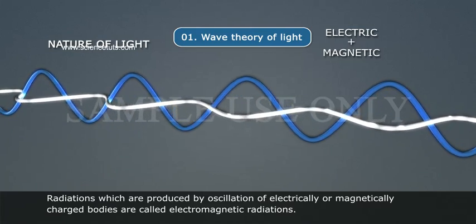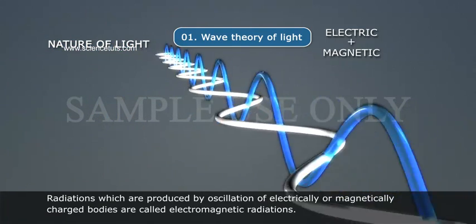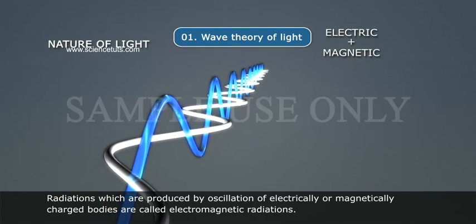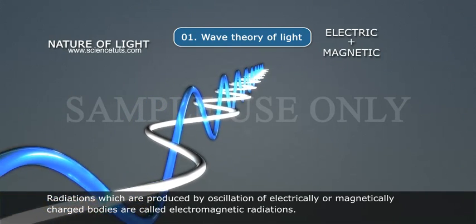Radiations which are produced by oscillation of electrically or magnetically charged bodies are called electromagnetic radiations.